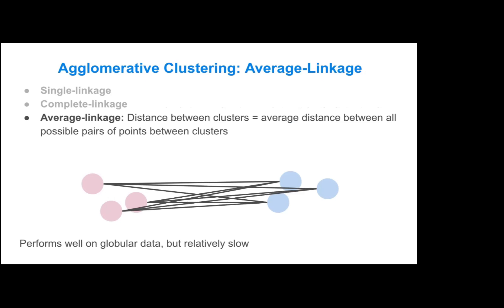The third method is average linkage, and this is where the distance between the clusters is equivalent to the average distance between all possible pairs of points between the clusters. This performs pretty well on most data sets, but because you're computing all those distances between the points, this is much slower than single and complete linkage.